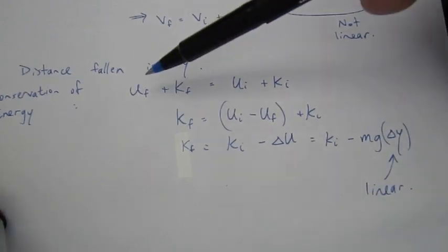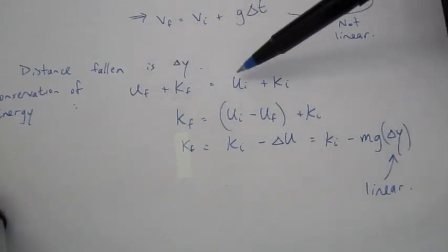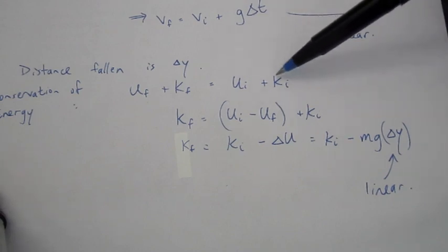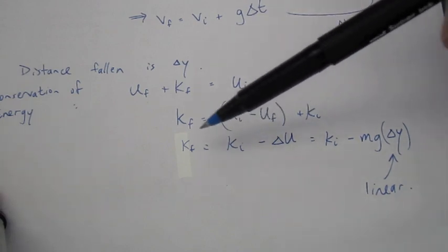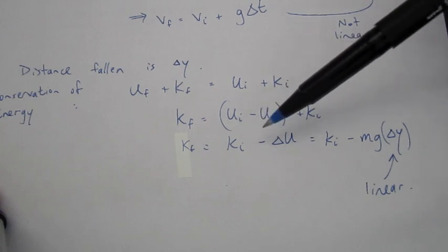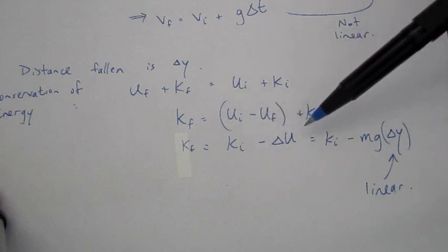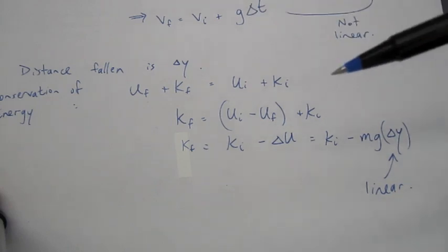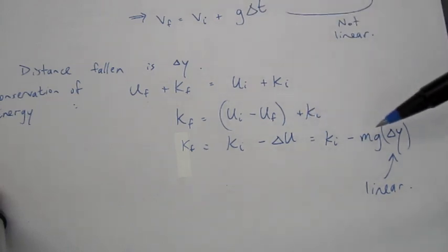The final potential plus kinetic is equal to the initial potential plus kinetic. So the final kinetic energy turns out to be the initial kinetic energy minus the change in gravitational potential energy.